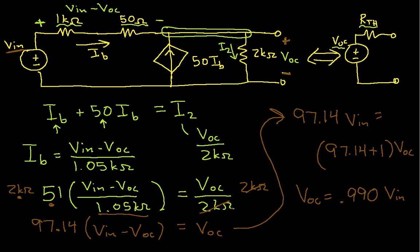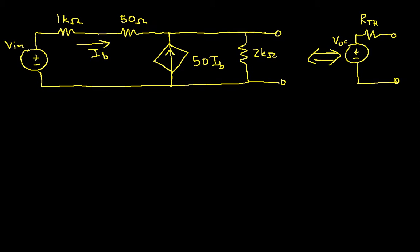The next thing we need to do in order to find the RTH, well, actually in a sense we're halfway done because we now have VOC. But to find RTH, we also have to find the short circuit current. So let's bring up a clean diagram and let's now find the short circuit current.